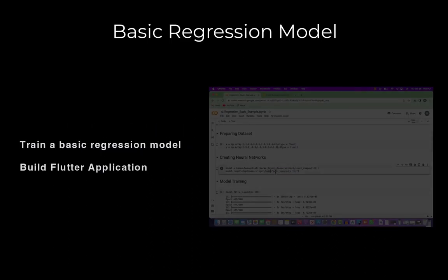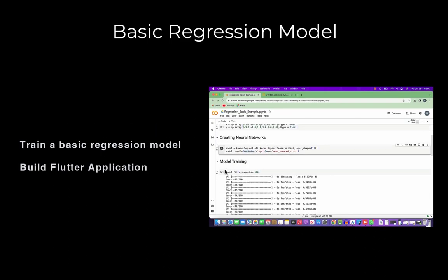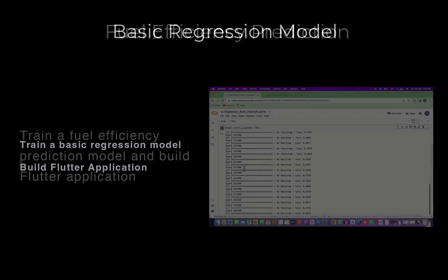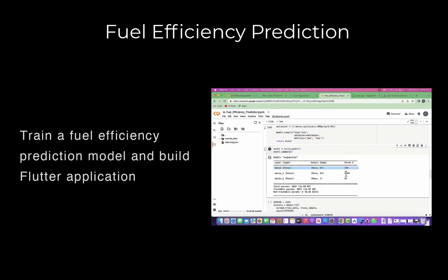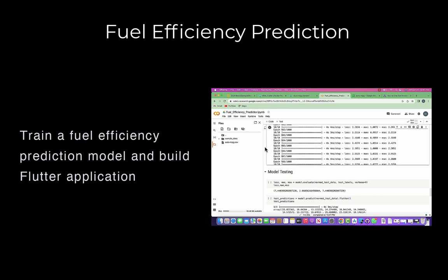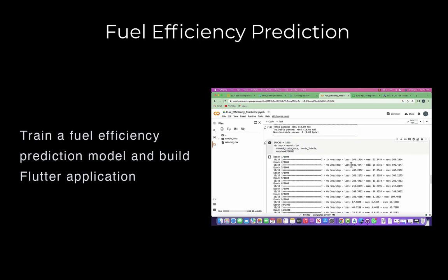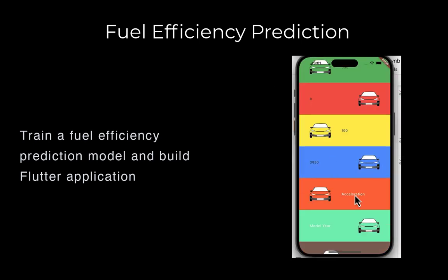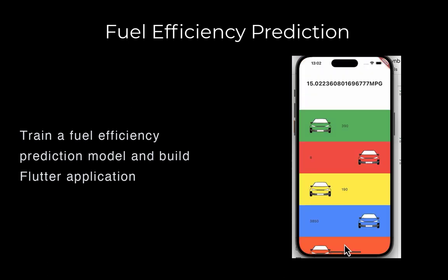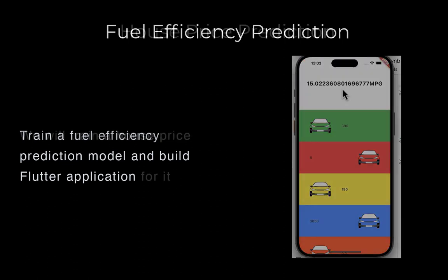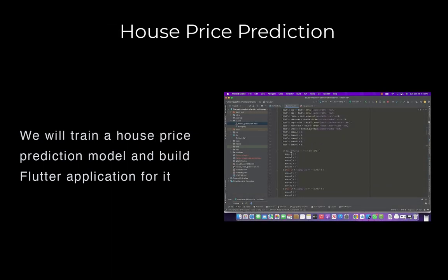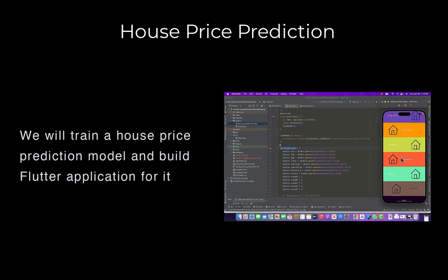Firstly, we are going to train a very simple regression model and build a Flutter application for it. After that, we are going to train an advanced regression model to predict fuel efficiency of automobiles, and then we are going to use that model in Flutter for building a beautiful fuel efficiency prediction application. Finally, we are going to train a house price prediction model and use it in Flutter for building our house price prediction application.